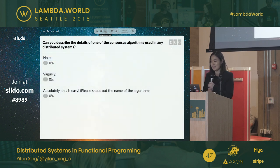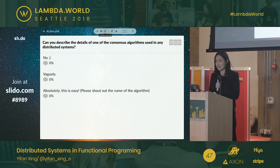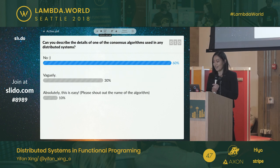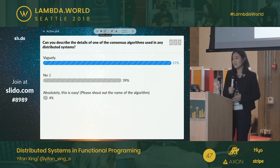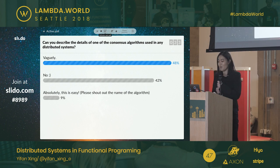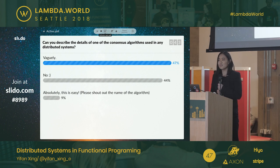Can you describe the details of one of the consensus algorithms used in any of the distributed systems? By describe, meaning can you explain why it works and how it works? 9%, 10% — I would love to talk with people who clicked. Absolutely, find me afterwards.